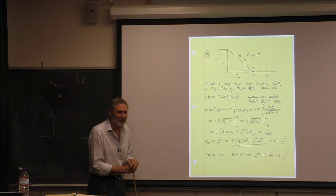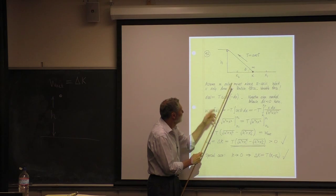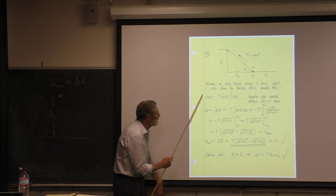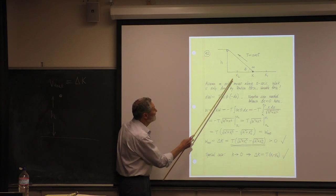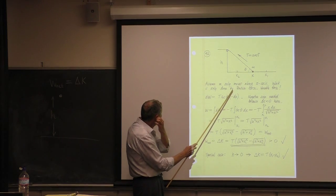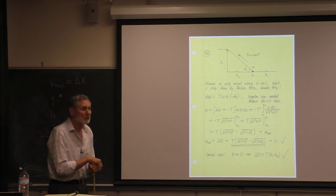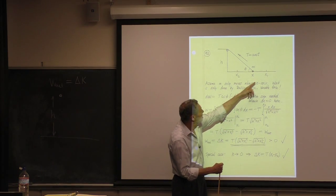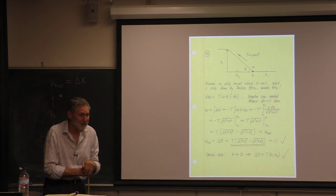For a variable force, work is not simply force times distance. We consider a small motion dx and integrate. The work is the tension times the cosine of theta times dx — but dx is negative in this integration, so a negative sign is needed. You must physically check your signs: the force has a positive x-component, so the work must be positive. If you omit the minus sign, you'll get a negative work — which would be wrong.